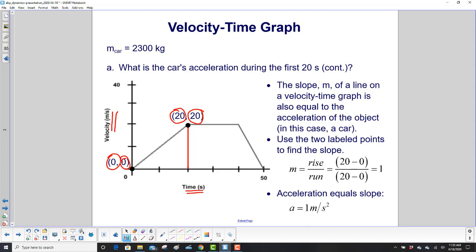We just showed that the slope of a line on a velocity-time graph is also equal to the acceleration of the object, in this case a car. So if we just do the slope, which equals rise over run, the rise is 20-0, and the run is 20-0. You divide them, that's 1. But we just said that the slope equals the acceleration, so the acceleration is 1 m/s².